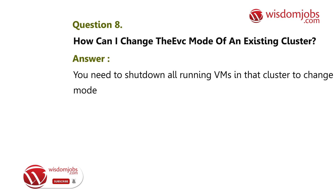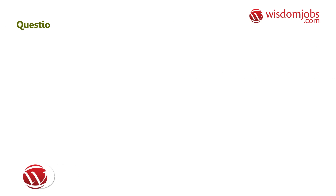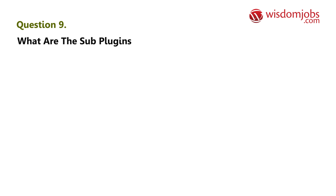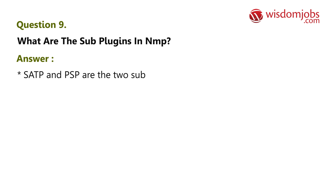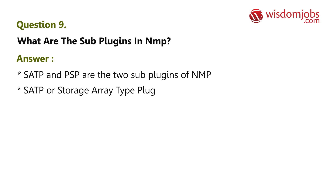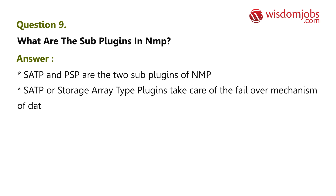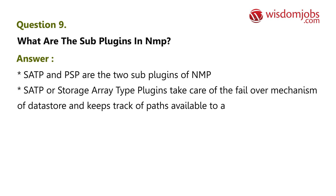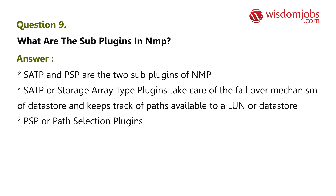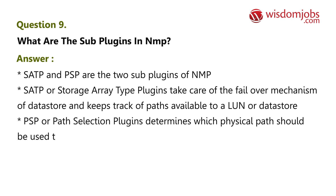Question 9: What are the sub-plugins in NMP? Answer: SATP and PSP are the two sub-plugins of NMP. SATP — Storage Array Type Plugins — takes care of the failover mechanism of a datastore and keeps track of paths available to a LUN or datastore. PSP — Path Selection Plugins — determines which physical path should be used to issue I/O requests to a storage device.